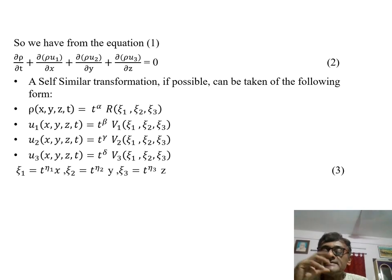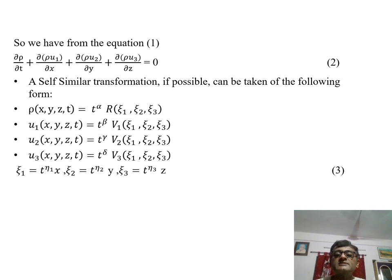The next part is that let us assume at the very beginning that there is some form of self-similarity in the expressions of these rho, U1, U2 and U3. Accordingly, we put these particular expressions in this form. Rho is taken as T to the power alpha times R, one particular function of the different coordinate systems xi1, xi2, xi3. These are being mapped from X, Y, Z, projected from X, Y, Z coordinate to the xi1, xi2, xi3 coordinates. Similarly, U1 is taken T to the power beta into V1, U2 is taken T to the power gamma into V2, U3 is taken T to the power delta into V3. These xi1, xi2, xi3 are taken as T to the power eta1 into X and so on.